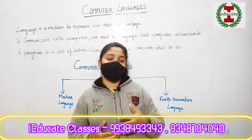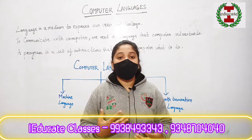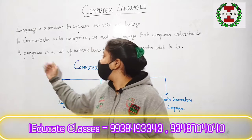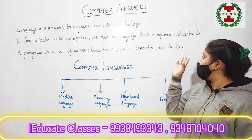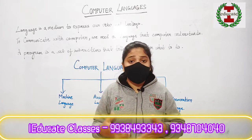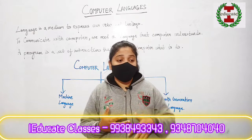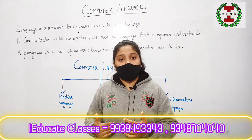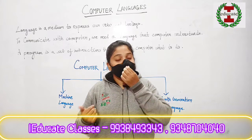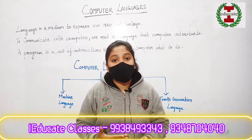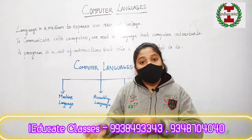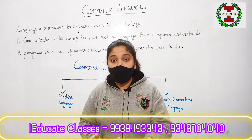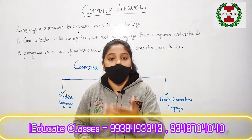Whatever we type into a computer is also known as instructions. What we give to the computer as instructions is known as a program. A program is a set of instructions that tells a computer what to do. Just like in a singing competition you have to learn certain lyrics, or in a dance competition you have to practice certain steps to make a perfect performance — similarly, when we give certain instructions to the computer, the computer follows certain steps to perform that program. The instructions we give and the computer following them step by step and giving us the result is known as a program.